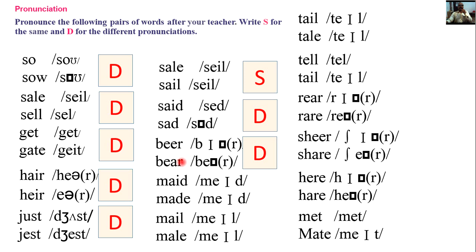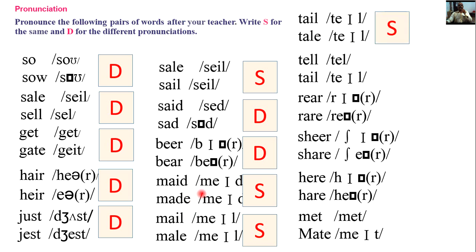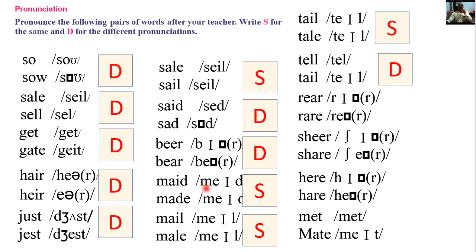Made and made — same. Male and male — same. Tail and tail — different. Rear and rare — different. Shear and shear — different. Here and hair — different. Mate and mate — different.